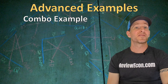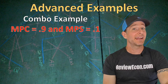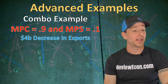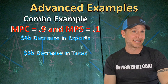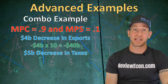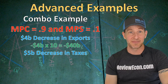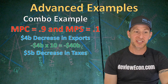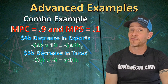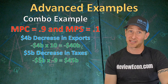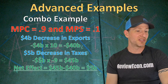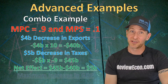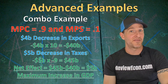You could also see questions with combinations of actions. With an MPC of 0.9 and MPS of 0.1, if there's a $4 billion decrease in net exports and also a $5 billion decrease in taxes: the net exports change is negative $4 billion times a spending multiplier of 10, giving a $40 billion decrease in GDP. The tax decrease is multiplied by a negative 9 tax multiplier, giving a $45 billion increase in real GDP. Taking the $45 billion increase minus the $40 billion decrease gives a net impact of a $5 billion increase in GDP.